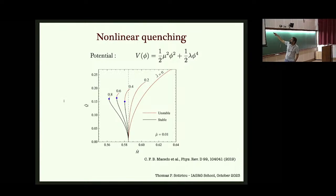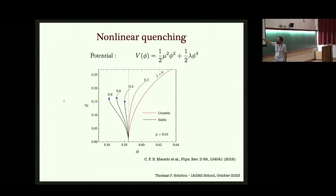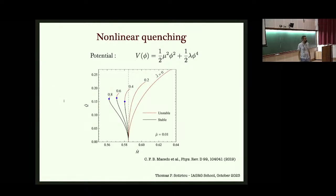But when you crank up λ (the φ⁴ coupling), the curves slowly tilt to the left. For sufficiently large λ they tilt leftward, and if you study the radial stability of solutions along these curves, they are indeed radially stable. It is reasonable that these are the endpoints of the instability: starting from a black hole on the left, the instability happens, and you end up somewhere with slightly smaller ADM mass but non-trivial scalar charge.